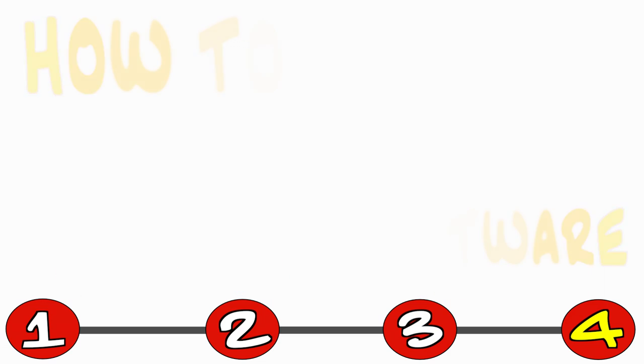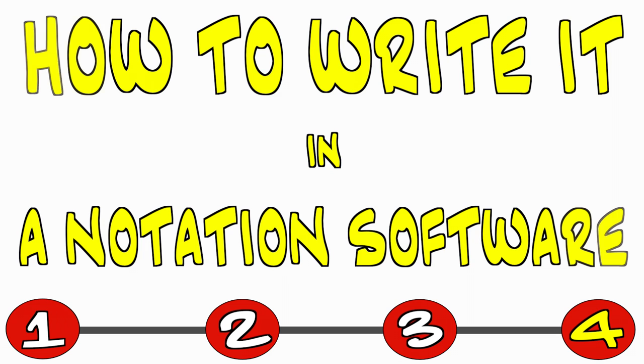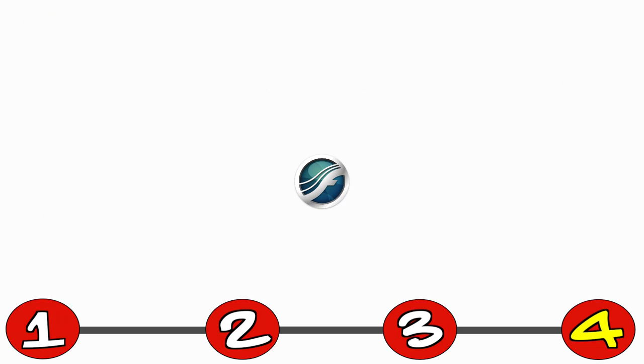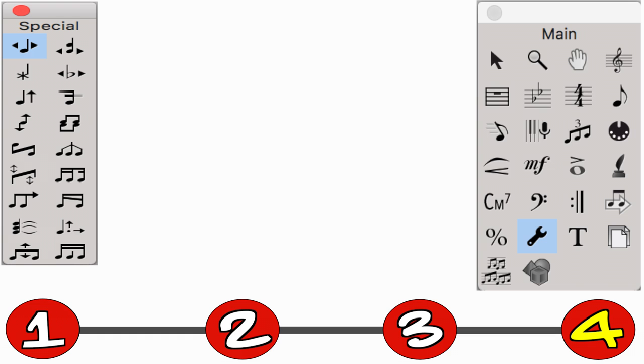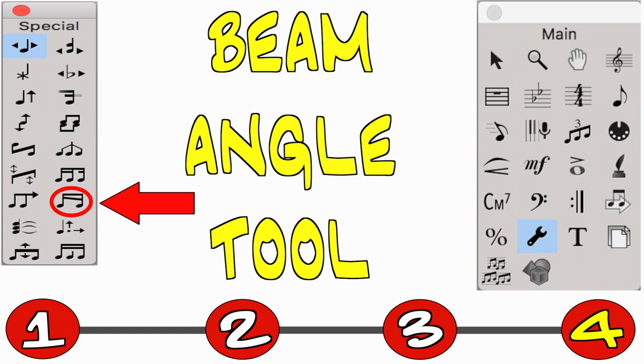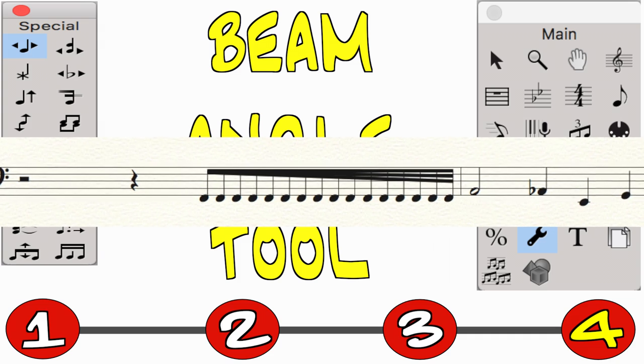Now for a brief how-to on how to construct this technique within a notation software. I'm going to use Finale. So you open up the special tools palette, which is the wrench on the main tool palette. And on the special tools palette you're going to want to pick the beam angle tool, which as you can guess, angles beams. You then drag the bars to the angle and position you want them at, and there you have your feathered beam.